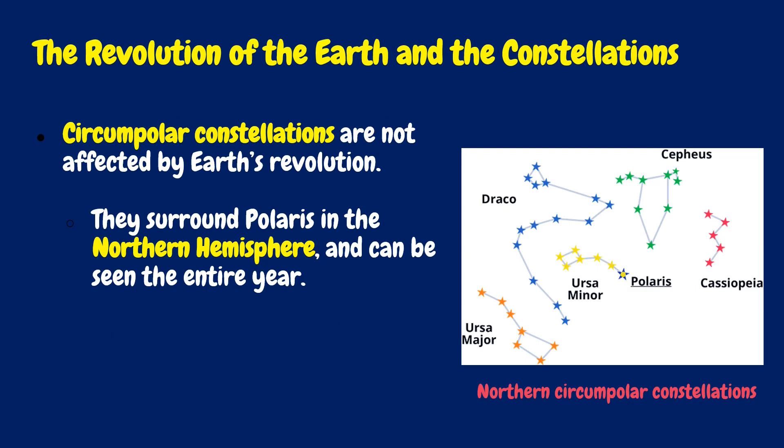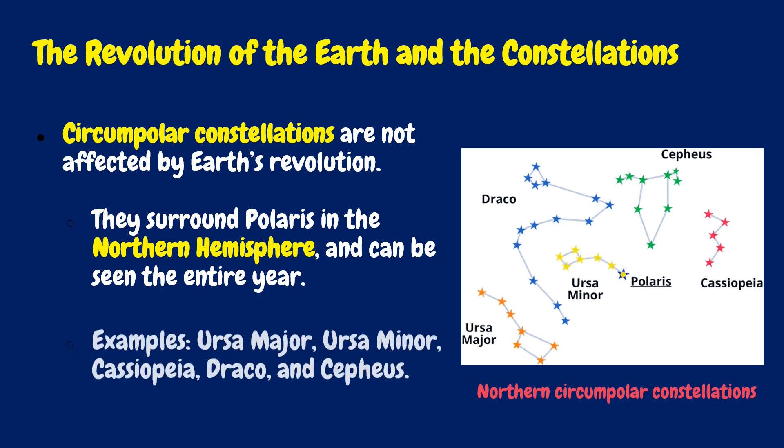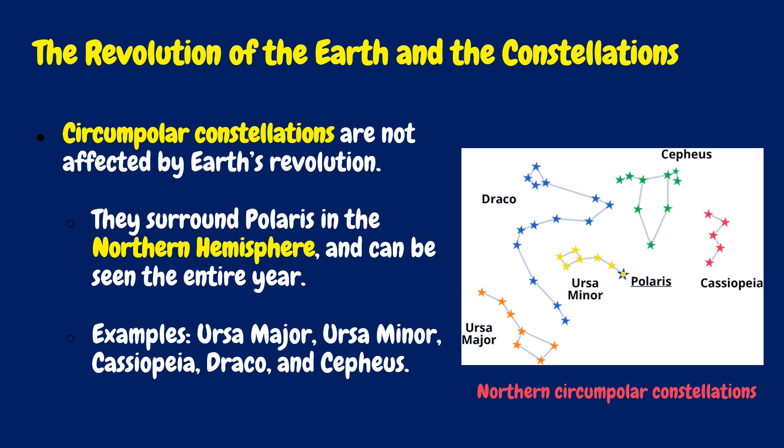Circumpolar constellations are not affected by Earth's revolution. They surround Polaris in the Northern Hemisphere and can be seen the entire year. Examples are Ursa Major, Ursa Minor, Cassiopeia, Draco, and Cepheus.